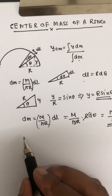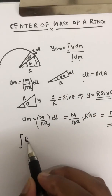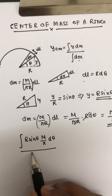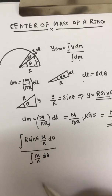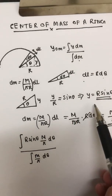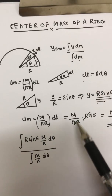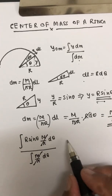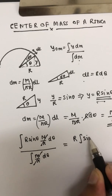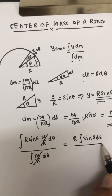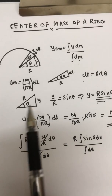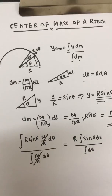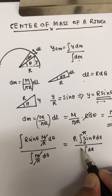So ycm = ∫r sinθ · (m/π) dθ divided by ∫(m/π) dθ. The m/π cancels out since it's a constant. We get r ∫sinθ dθ divided by ∫dθ. The limits of integration are 0 to π — when the element is at one end θ = 0, and at the other end θ = π.